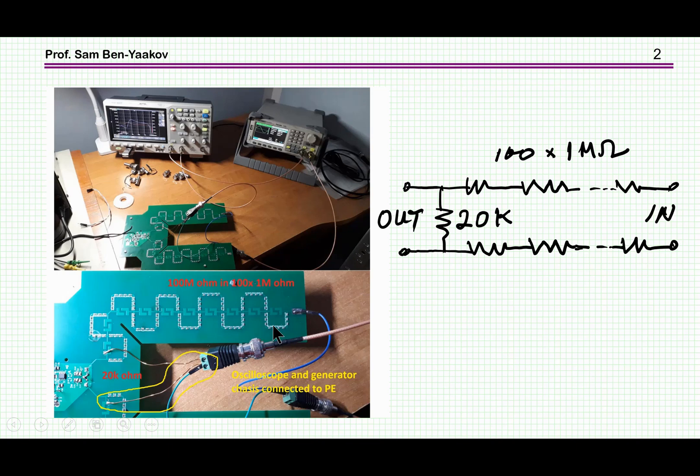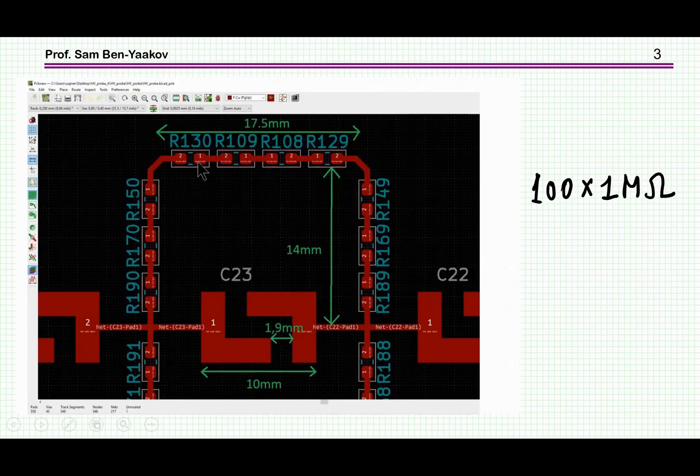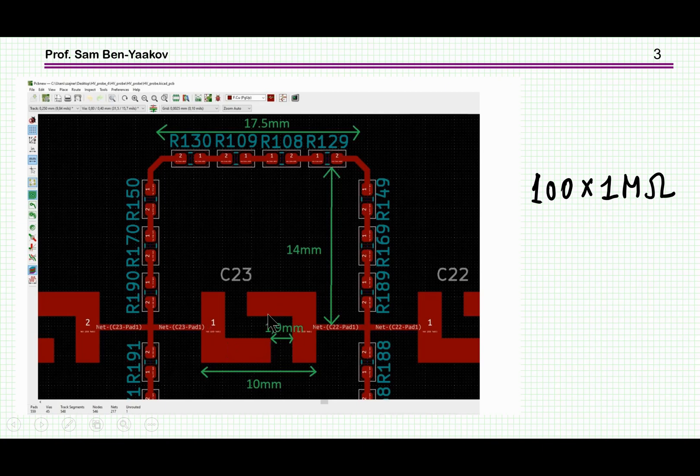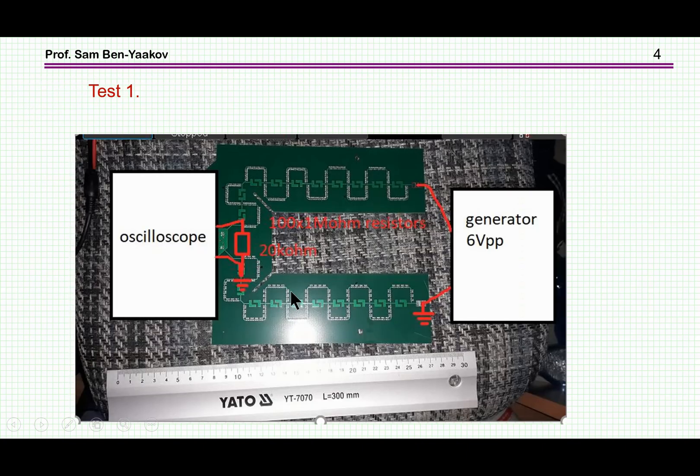Looking close at the actual layout of the PCB, here it is. We see here the resistors. Each one of these is one megaohm and there are a hundred of these on each branch. And here there is a preparation for a capacitor that was not mounted. So the first experiment was feeding the generator six volts to this probe and looking at the 20 kiloohm load with an oscilloscope and deriving the transfer function as a function of frequency.